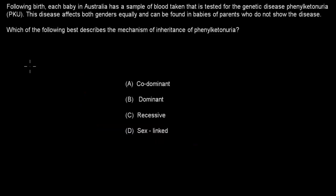Next one is: Following birth, each baby in Australia has a sample of blood taken that is tested for the genetic disease Phenylketonuria, PKU. This disease affects both genders equally and can be found in babies of parents who do not show the disease. Which of the following best describes the mechanisms of inheritance of Phenylketonuria? A. Co-dominant. B. Dominant. C. Recessive. Or D. Sex-linked. Pause the video and attempt the question.